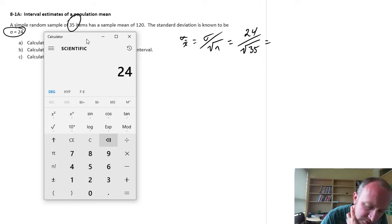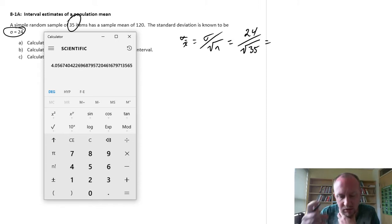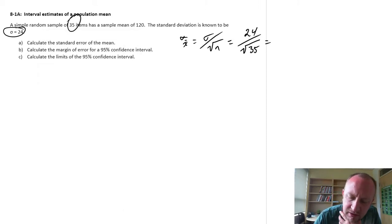So 24 divided by root 35, there we go. So 4.0, let's call it 4.06. There's 4.06, so there's our standard error of the mean, 4.06.